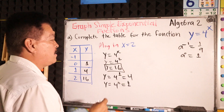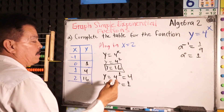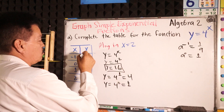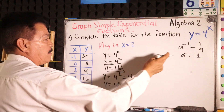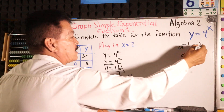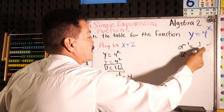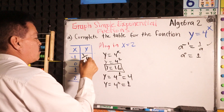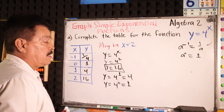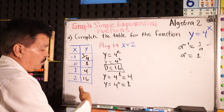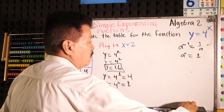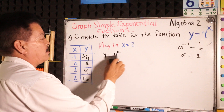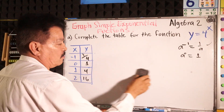The next one — remember from last time — for x equals negative 1, it equals 1 over 4 right here. So now we have our table complete.